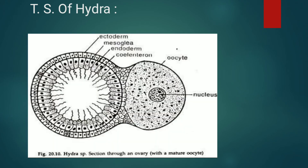Now we see the TS of Hydra. The body wall is composed of two layers of cells: an outer ectoderm and an inner endoderm. Between the two cellular layers there is a thin non-cellular mesoglea of jelly-like consistency. The ectoderm forms the outer epidermis and consists of epithelial muscular cells, interstitial cells, nematoblasts or stinging cells with nematocysts, sensory cells, nerve cells, and secretory cells.